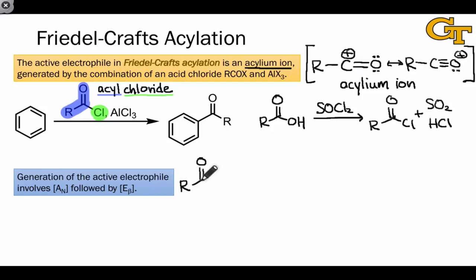The first step is again the formation of a Lewis acid-Lewis base complex between the AlCl3 promoter and the acyl chloride. The chlorine atom has lone pairs, one of which can coordinate to the aluminum center. We see the acyl chloride acting as a Lewis base and the aluminum trichloride acting as a Lewis acid in this process.